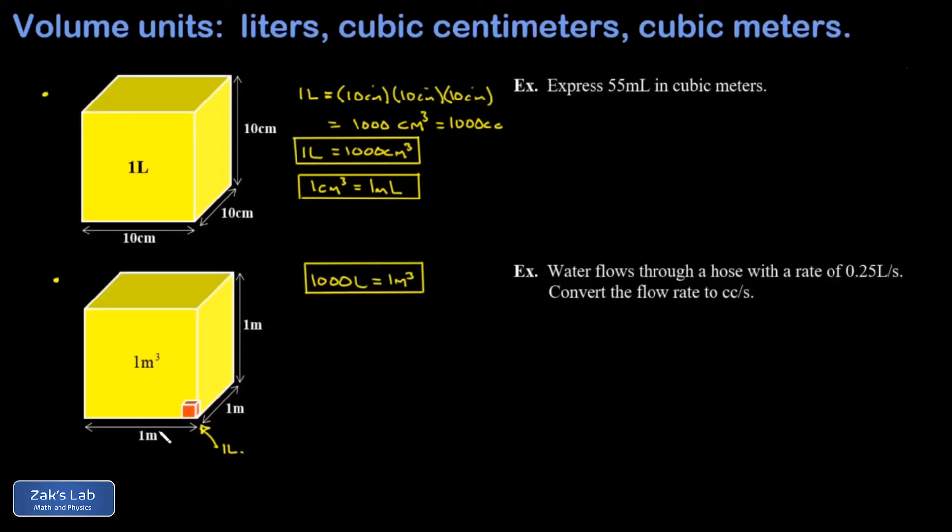Finally, there's one more useful conversion to talk about. I could express each side of this cubic meter in centimeters. Then I could say the cubic meter is equal to the length times width times height expressed in centimeters. Well, 100 times 100 times 100 is a million, or 10 to the sixth. And I find out that one cubic meter is equal to a million cubic centimeters.